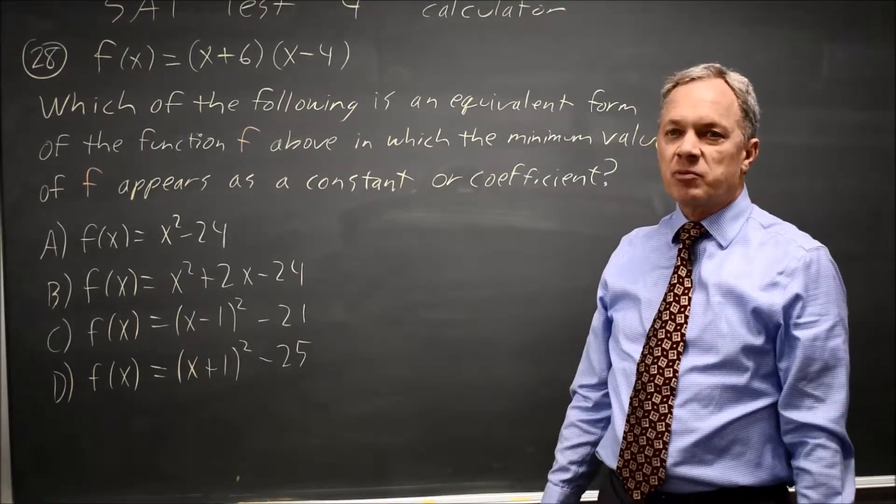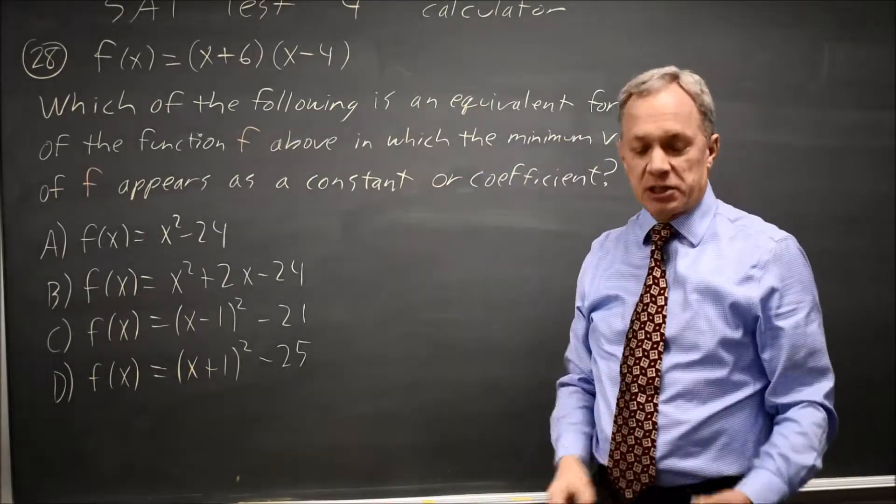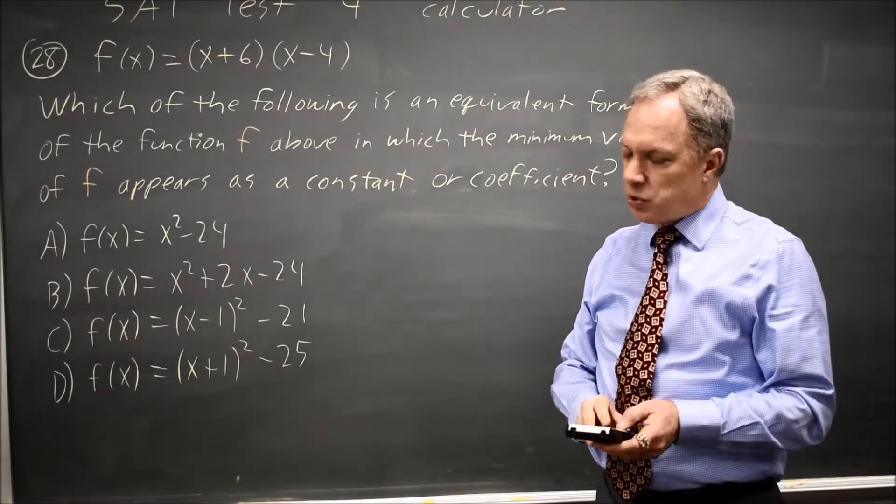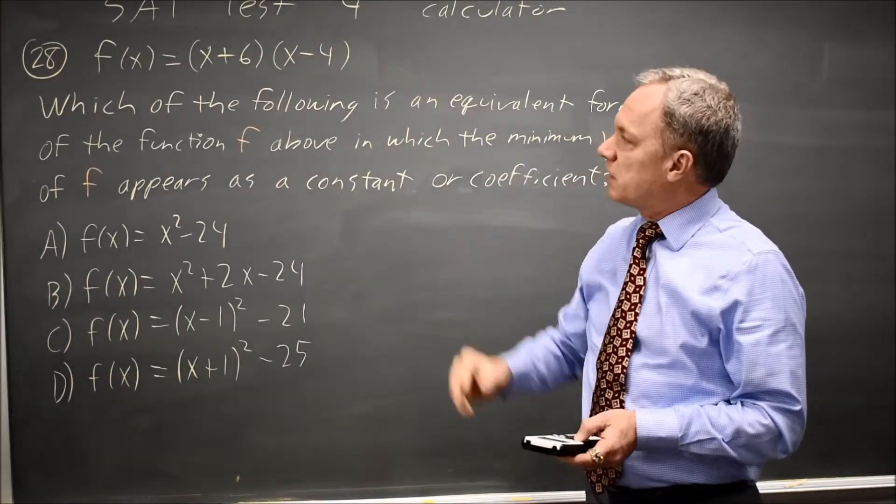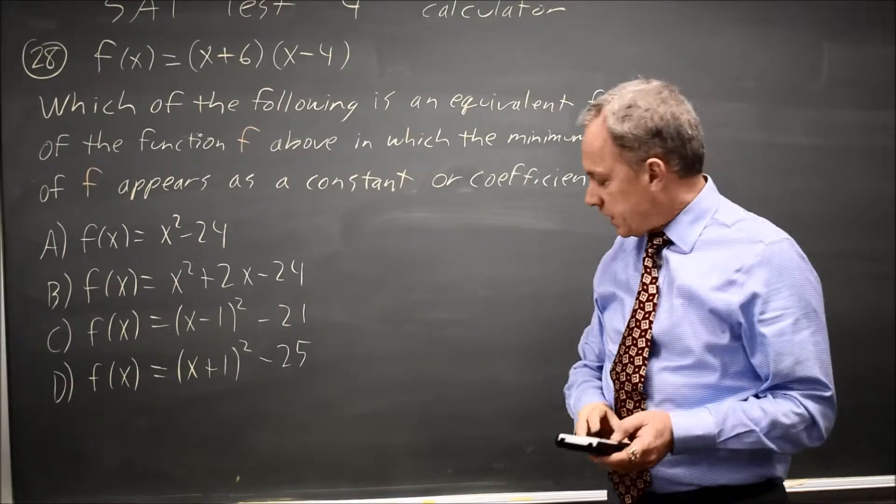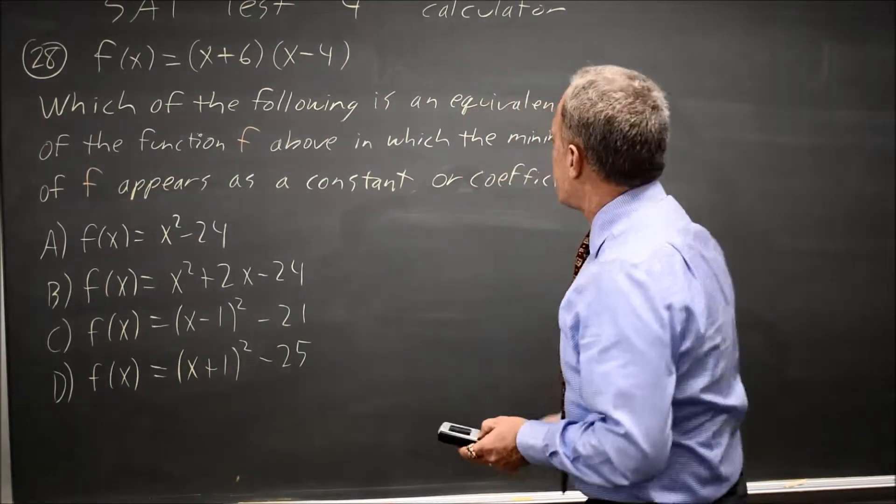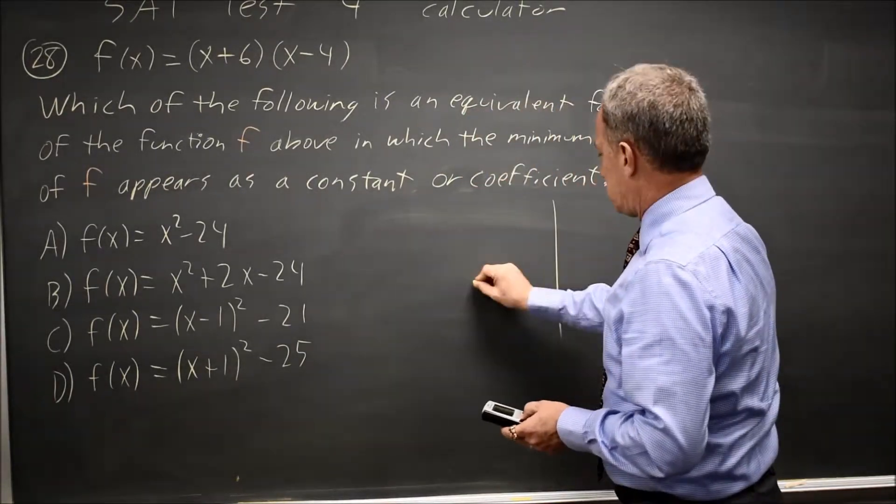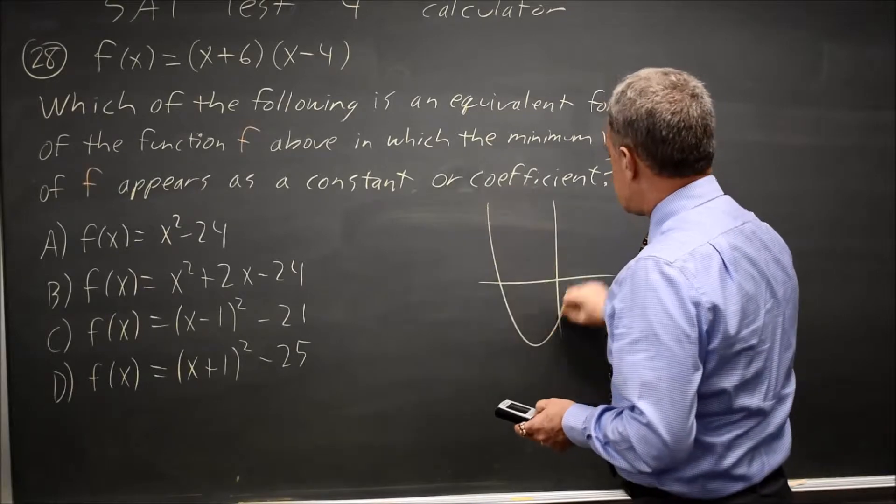Since they're asking for the minimum value, and this is a calculator question, I'm just going to my calculator, put F of X into Y equals in its factored form, hit graph, and I see a parabola opening up, something like this.